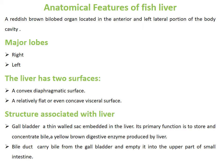Laterally, the liver is located on the left side of the body. It has two unequal-sized lobes — a right lobe and a left lobe — with the left lobe larger than the right. Its size and shape vary among species. The liver has two surfaces: a convex diaphragmatic surface and a relatively flat or even concave visceral surface.